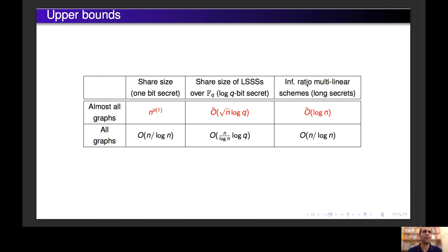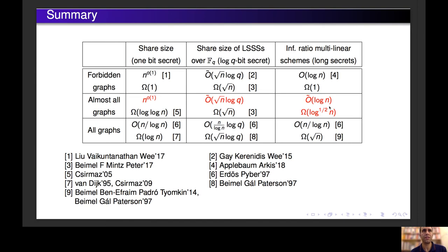These are the upper bounds we got. This construction is not linear, so we also consider the linear case and found linear schemes and multi-linear schemes for almost all graphs. This is the complete picture: these are the upper bounds for almost all graphs, and we can see that the upper bounds for almost all graphs are between the upper bounds for forbidden graphs and for all graphs. The same holds for other efficiency measures and also for the lower bounds.